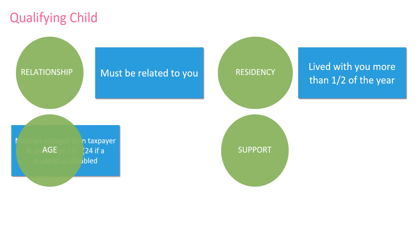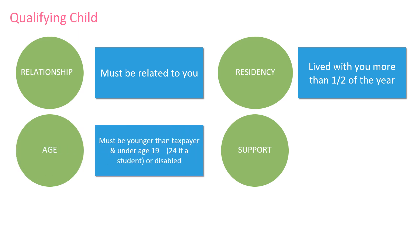Age: to meet this test, the child must be under age 19 — meaning 18 and younger — at the time of the tax year, and also younger than the taxpayer; or a full-time student under the age of 24 — meaning 23 and younger — at the end of the year and younger than the taxpayer; or they can be any age if permanently and totally disabled.